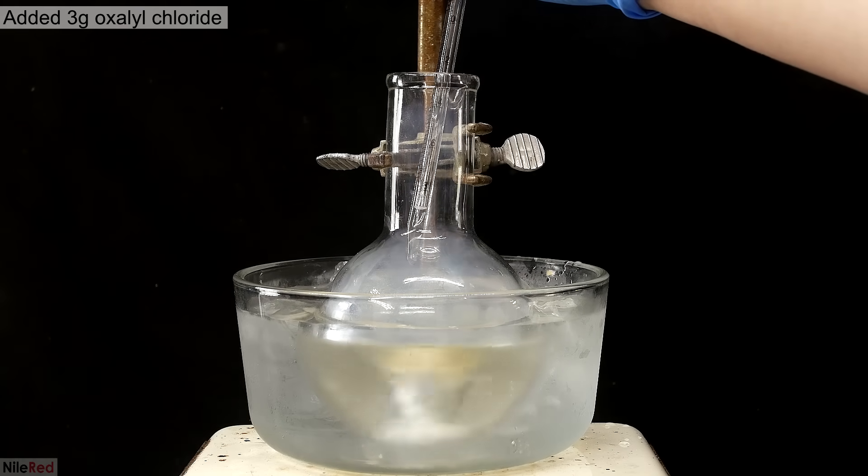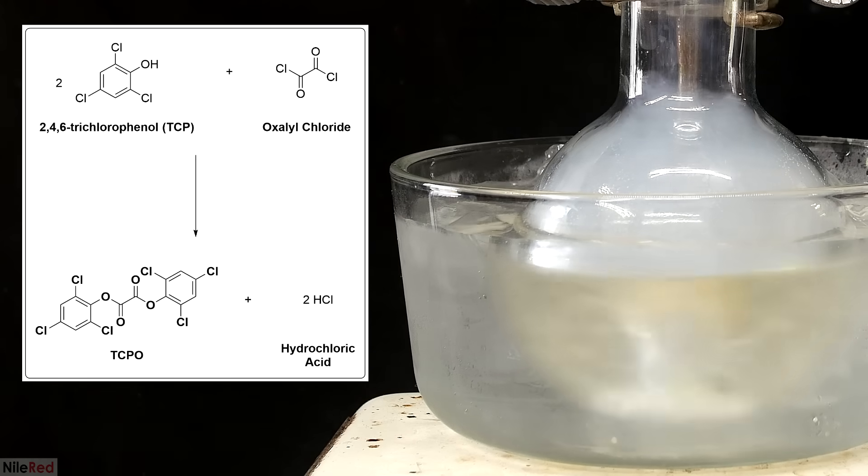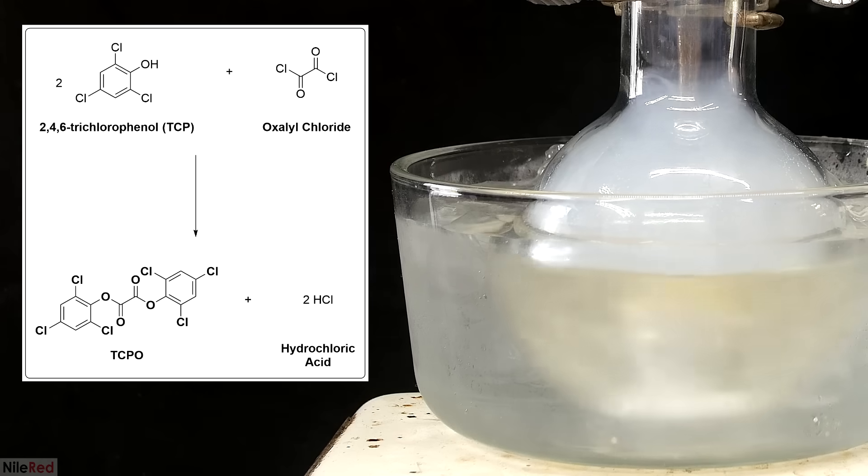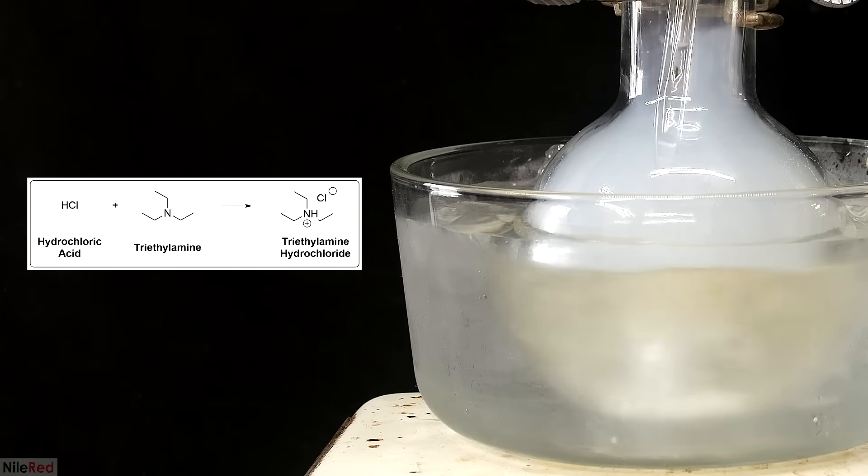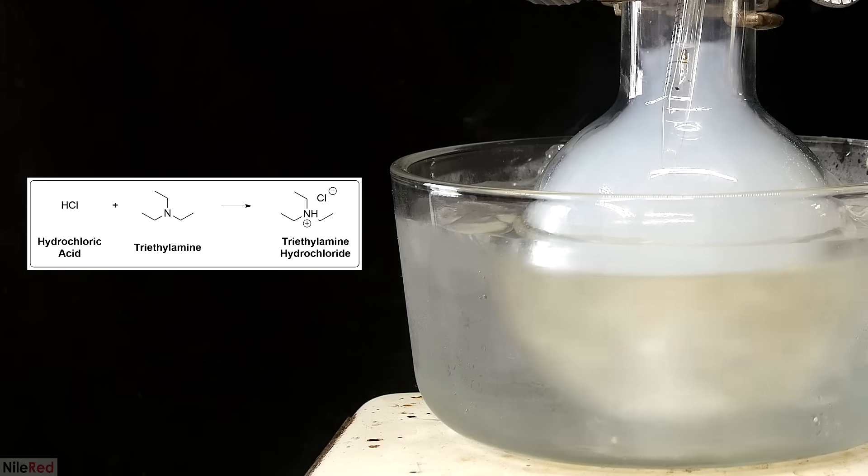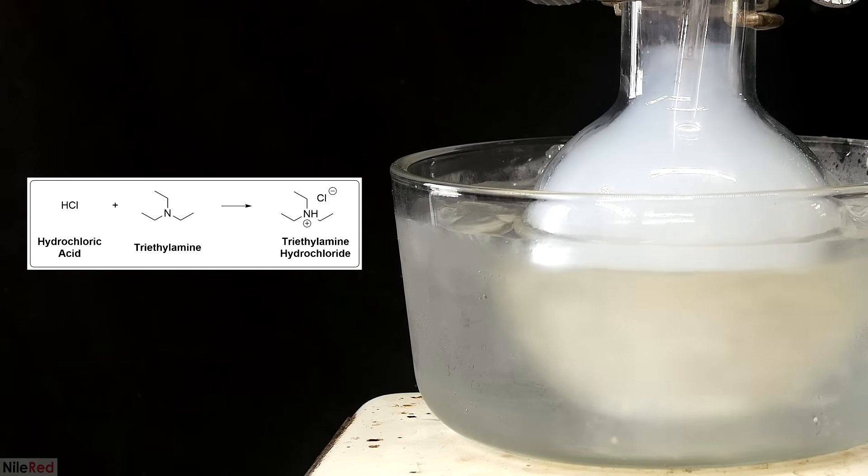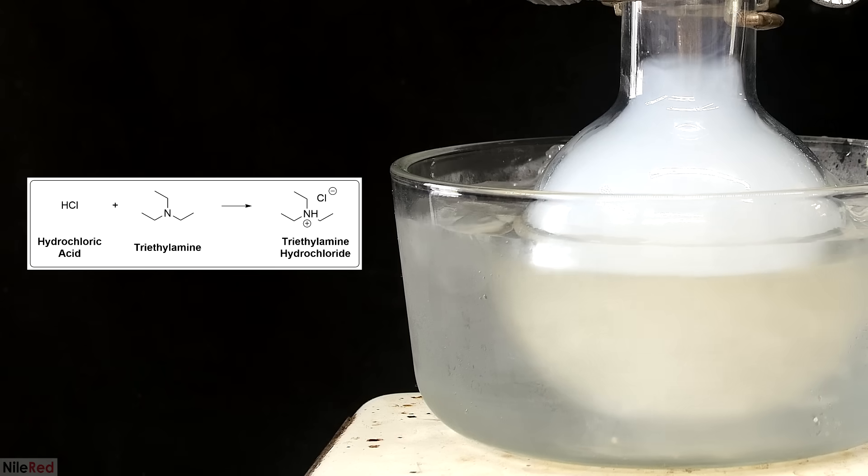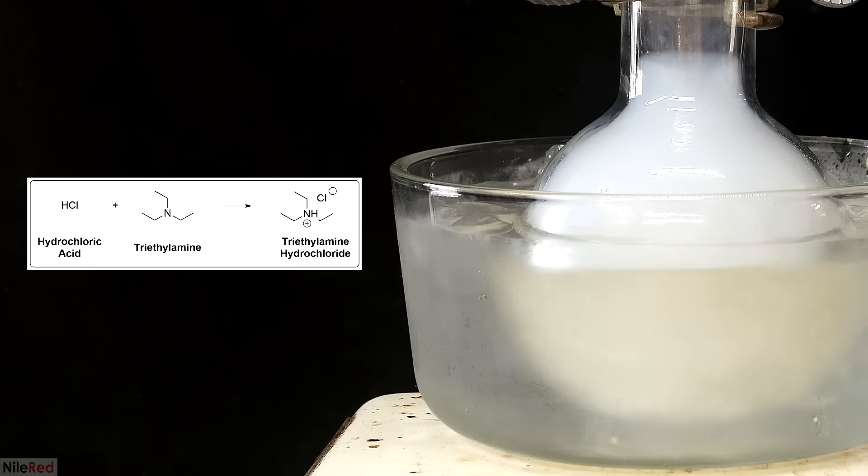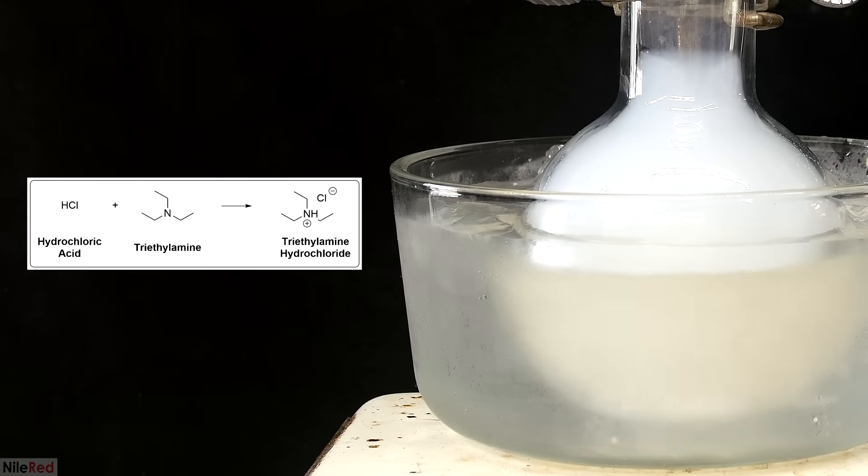So the reaction that I'm doing here is between TCP and oxalyl chloride, which produces TCPO and hydrochloric acid. The hydrochloric acid doesn't exist for very long though, because the triethylamine base that's present very quickly reacts with it. Both the triethylamine hydrochloride that's produced in this reaction and the TCPO that's produced in the main reaction are more or less insoluble in toluene.